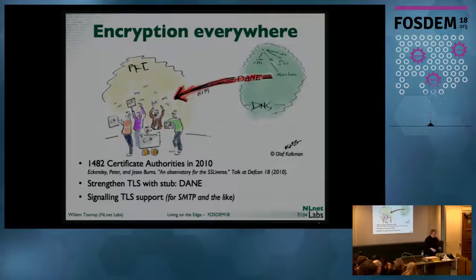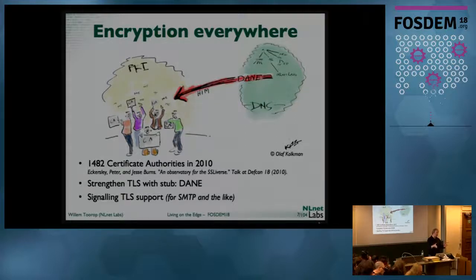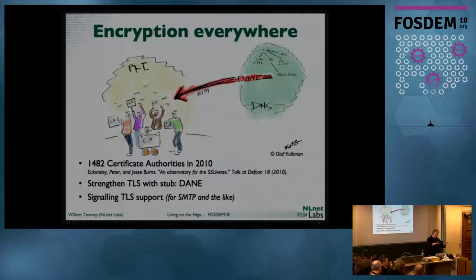In contrast to regular PKIX, with DNSSEC you ultimately have the root zone — the DNS key of the root zone — vouching for the delegation to the top level domain. The top level domain has its own key that vouches for the second level domain, which is mostly where your service resides. So instead of having at least 1500 certificate authorities, you have two.